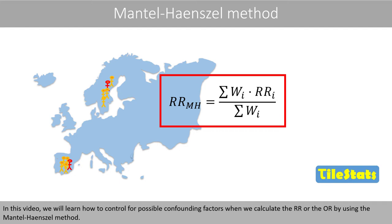In this video, we will learn how to control for possible confounding factors when we calculate the relative risk or the odds ratio by using the Mantel-Haenszel method.